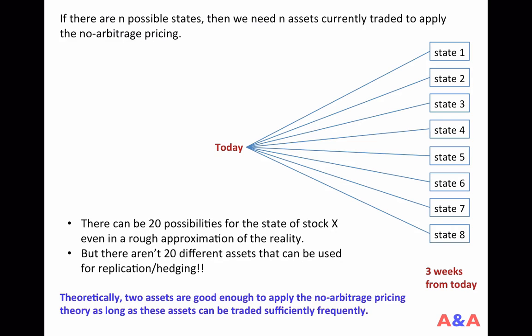The point of today's class is that theoretically, two assets are good enough to apply the no-arbitrage pricing theory as long as these assets can be traded sufficiently frequently. Just two assets is good enough.